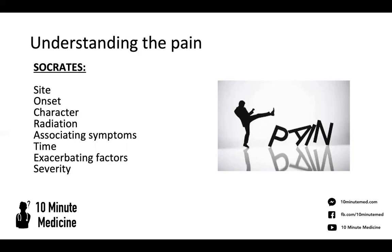Then you want to know the onset — when has it started and how long has it been going on for? We move on to character and radiation: what's the pain like? Is it sharp? Is it dull? Does it move anywhere or go to other parts of the body? Associated symptoms — anything that happens at the same time, like nausea and vomiting. And the time frame — how long has this been going on for?